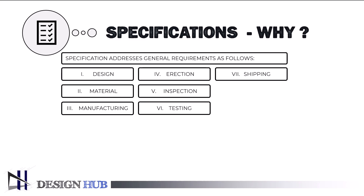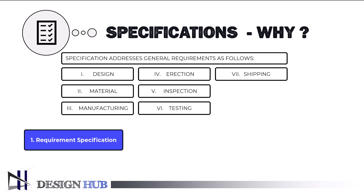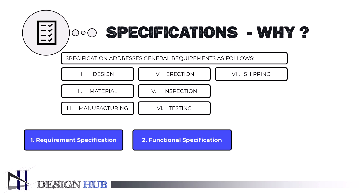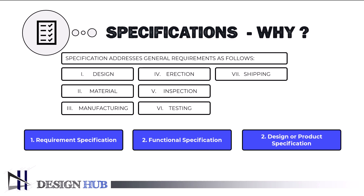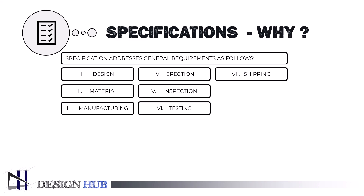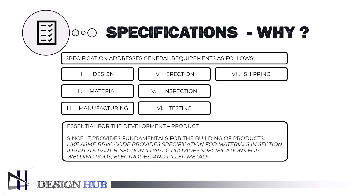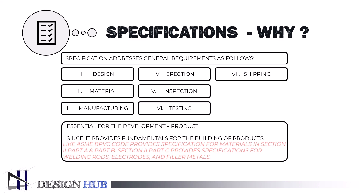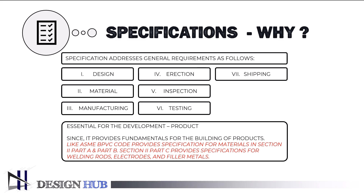Three fundamental sorts of specifications are possible. A requirement specification is a list of formal specifications that a material, design, product, or service must meet. A functional specification, which may include functional block diagrams, is a requirement outlining the functionalities that the product must fulfill. A design or product specification outlines the particular characteristics incorporated into the product's design and offers details about a product's features to verify whether the creators have adhered to the requirements. For example, the ASME BPVC code provides specification for materials in Section 2 Part A and Part B; Section 2 Part C provides specifications for welding rods, electrodes, and filler metals.